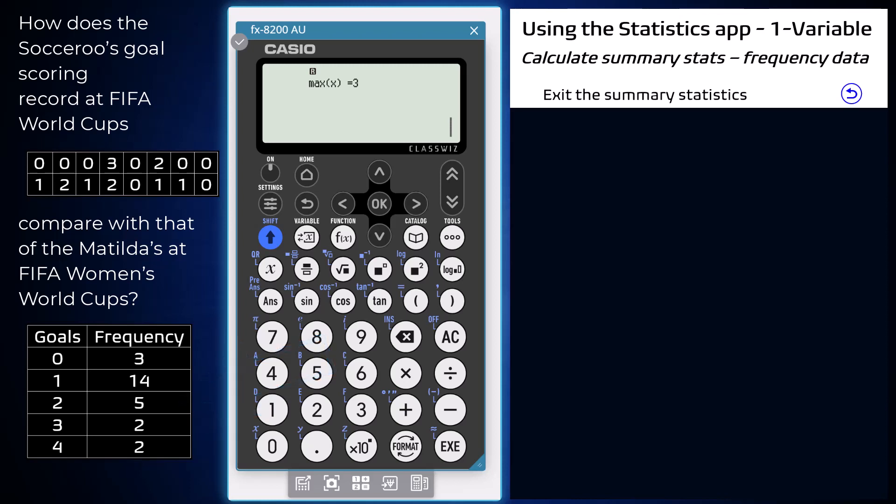To enter this data set, I am going to first have to exit out of these summary statistics by pressing the back key located to the left of the arrow keys.